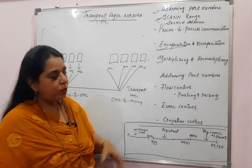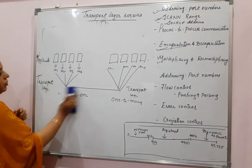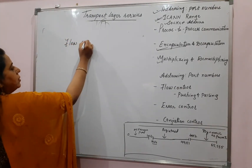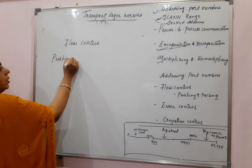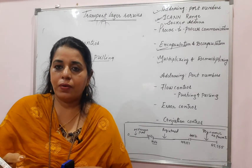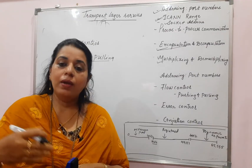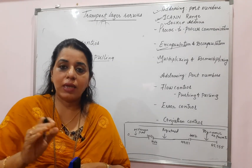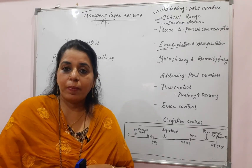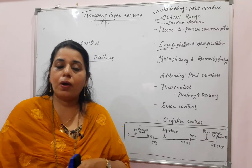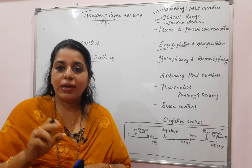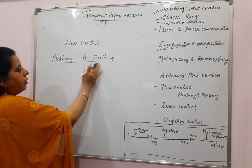The next service in the list is flow control. To understand flow control, you have to understand the terms pushing and pulling. Normally, packets start flowing from the source at a very fast speed. The receiver should also process those packets at the same speed. If the rate at which packets are sent from the sender does not match the rate at which the receiver is processing them, most packets will get dropped. So there should be some mechanism to control the flow of packets at the sender side — that is called flow control.